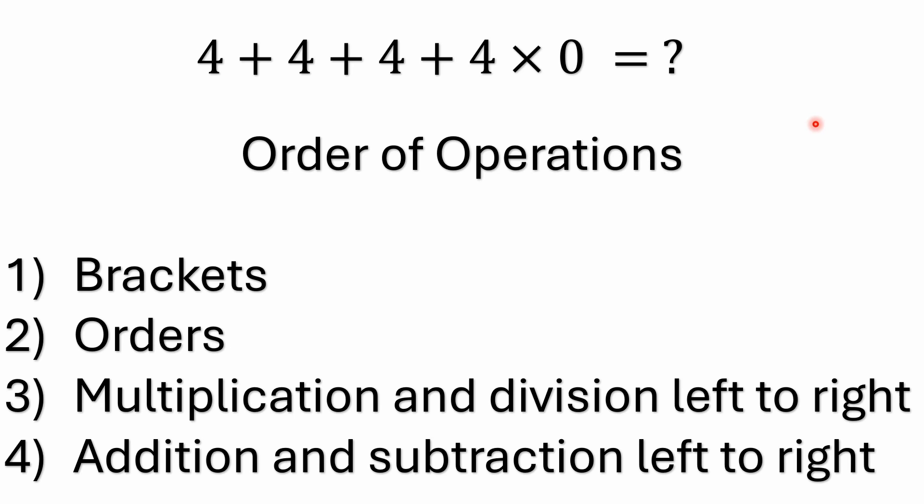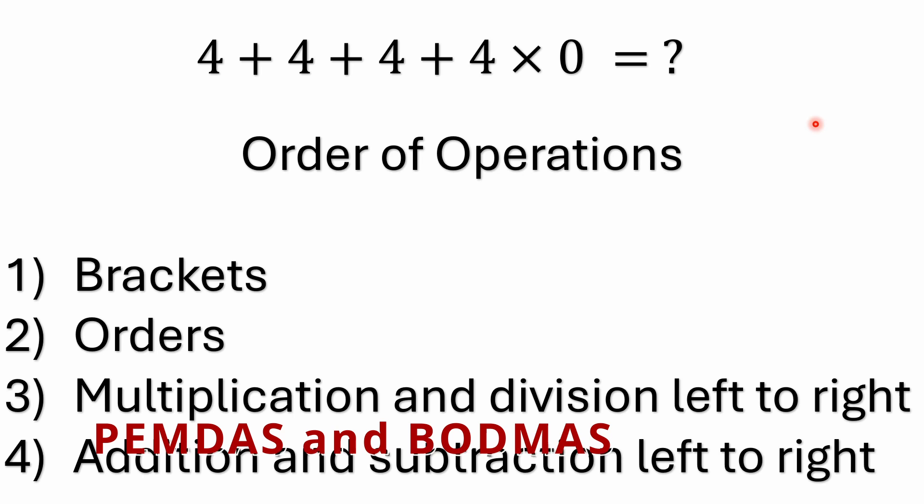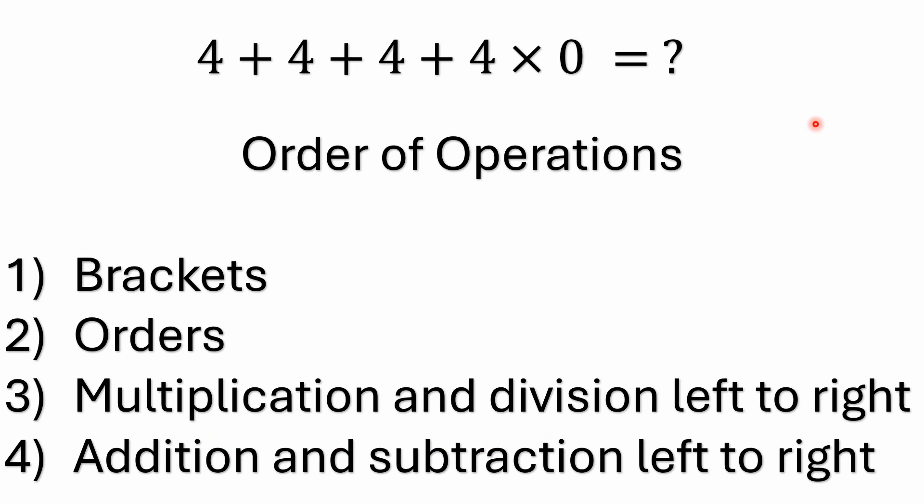Now if you're in the UK or some other countries, they may list the order of operations as brackets and then orders. Orders is actually probably a better term than the exponents used in North America. The nice thing about orders is it's a general term covering exponents, square roots, factorials — anything that is shorthand for repeated multiplication. People that understand PEMDAS and BODMAS, they're identical. It's the same order of operations, just some different terminology.